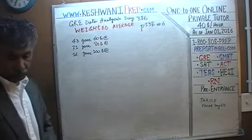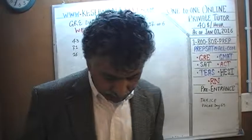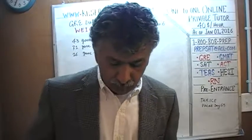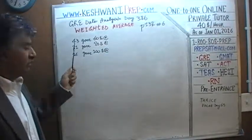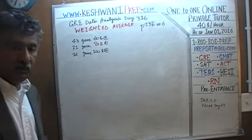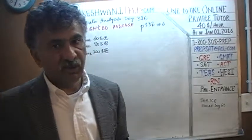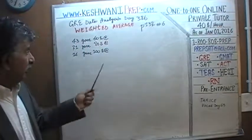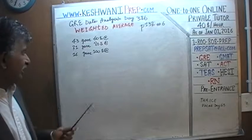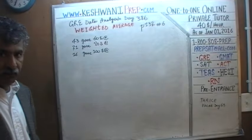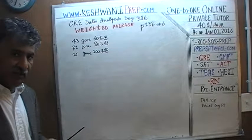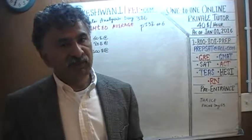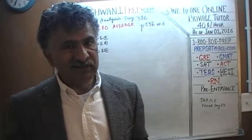You and I are going to do it together. We are told that we have a charity event. In this charity event, 43 individuals have given a contribution of $60 each, 21 individuals have given a contribution of $80 each, and 16 people have given $100. The question is: what is the average contribution? We have to use weighted average because the weights are different.